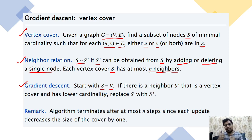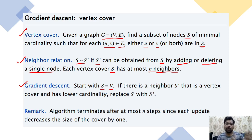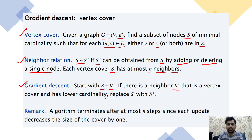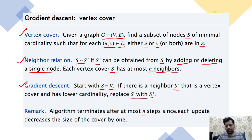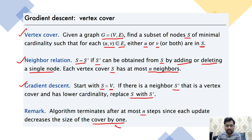Applying gradient descent: start with S equal to V, meaning all vertices are considered initially. Step one — consider all vertices as S. If there is a neighbor s-dash that is a vertex cover and has lower cardinality, replace S with s-dash. The algorithm terminates after n steps since each update decreases the size of the cover by one.